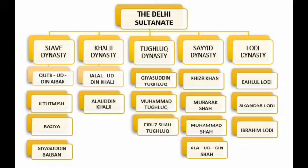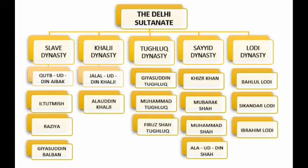The Tughlaq dynasty was the third. Ghiyasuddin Tughlaq was the person to start this dynasty, and Muhammad Tughlaq and Feroz Shah Tughlaq followed. The next two dynasties came to be known as later sultans and did not rule for a longer period. Under the Sayyid dynasty, Khizr Khan, Mubarak Shah, Muhammad Shah, and Alauddin Shah were the main rulers. Then came the Lodi dynasty, which was started by Behlul Lodi. Sikandar Lodi followed him, and then finally came Ibrahim Lodi.